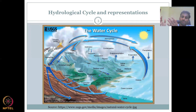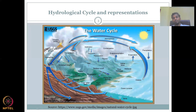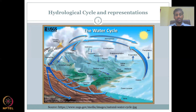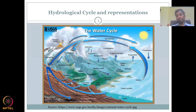Water always moves from high potential to low potential energy, and from high pressure to low pressure. When it finds a weak spot in the earth, it breaks through and comes out. That is where you have springs and waterfalls — you'll see water gushing out with force, because of the pressure difference.